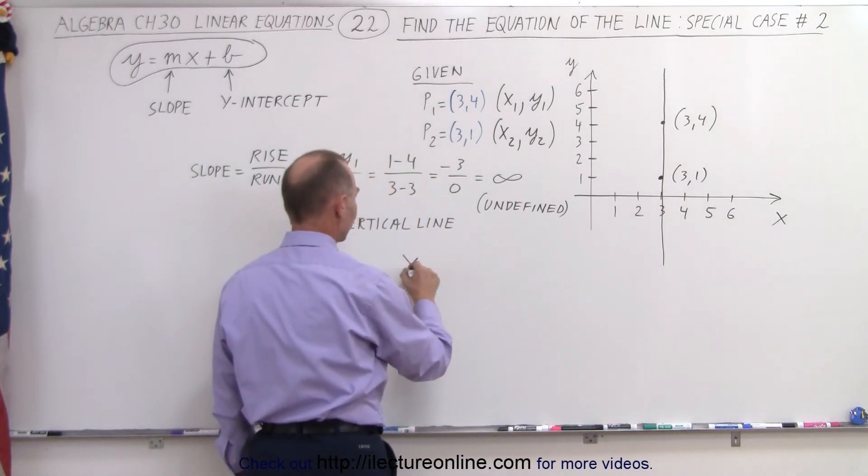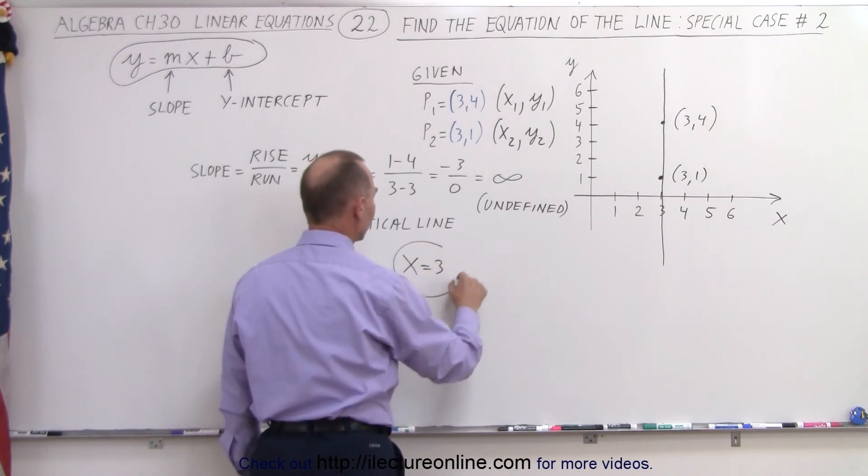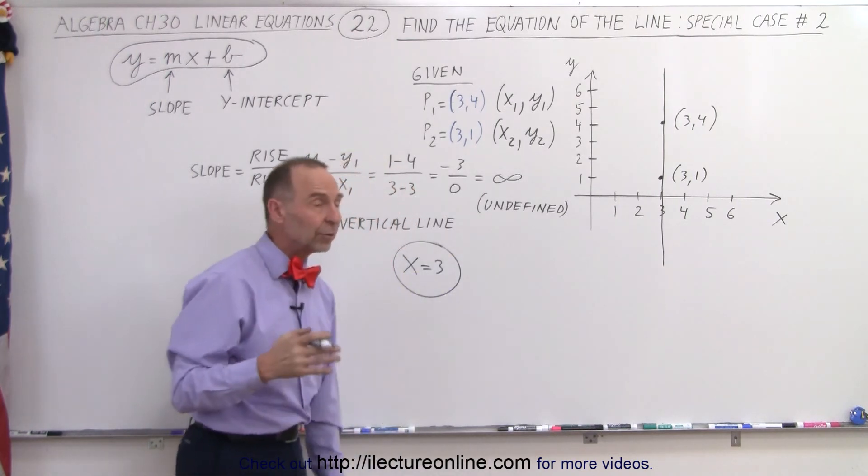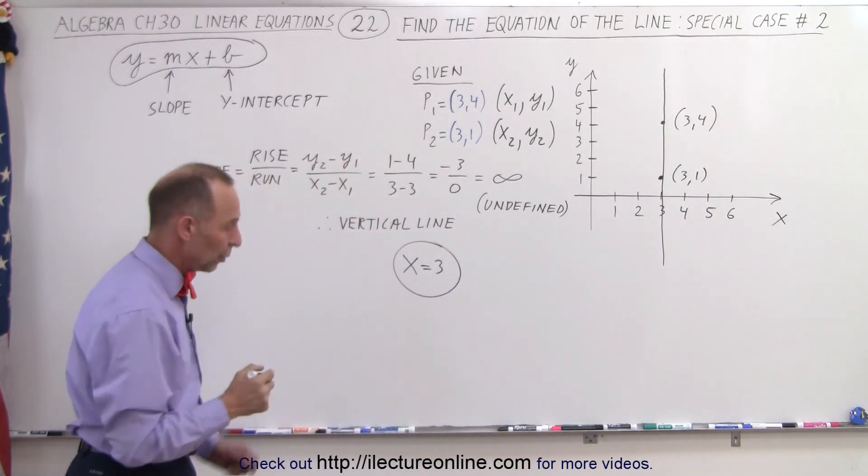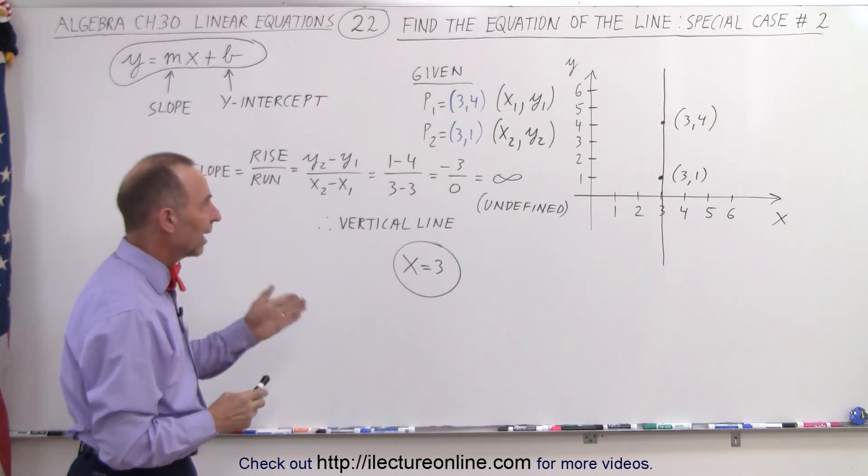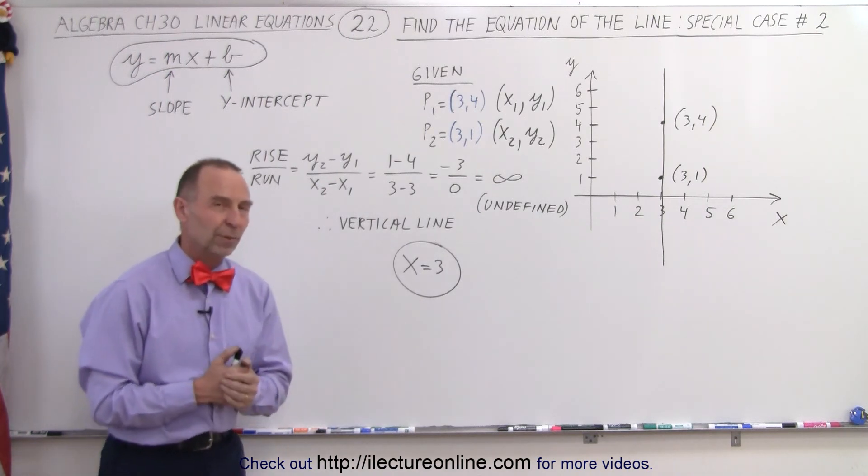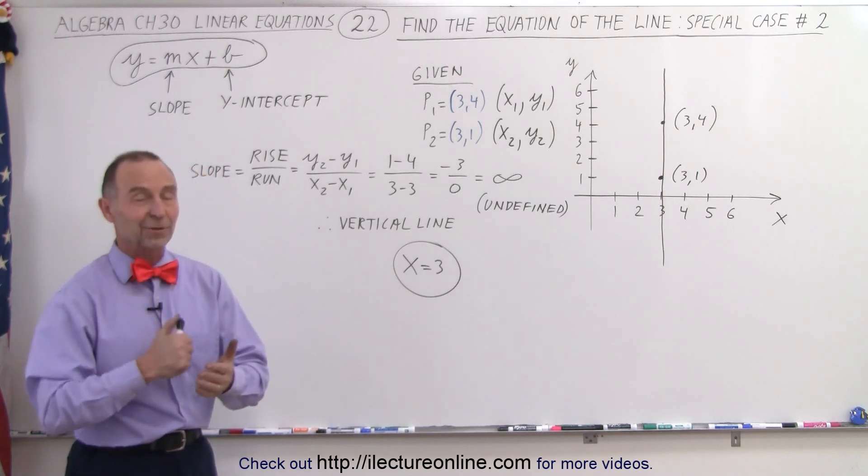We can simply state x equals 3 is the equation of the line, because it's equal to 3 everywhere, and it doesn't matter what the y-value is. And that is how we find this equation in this particular special case. That is how it's done.